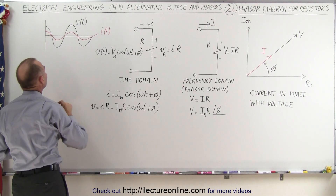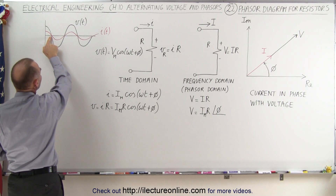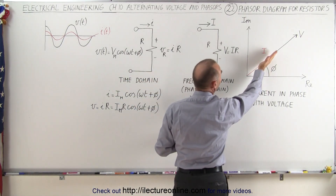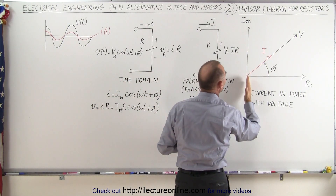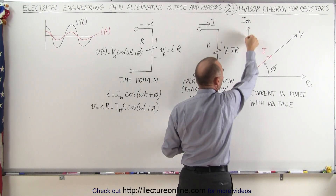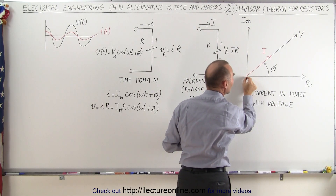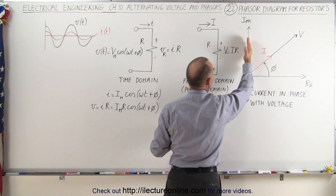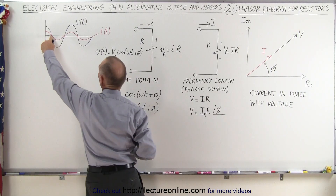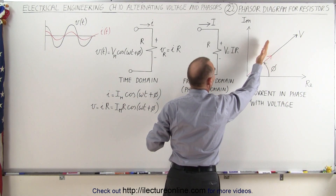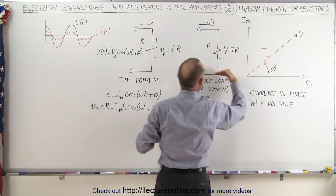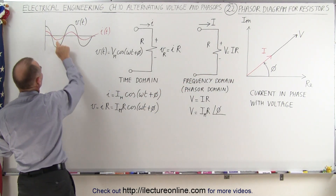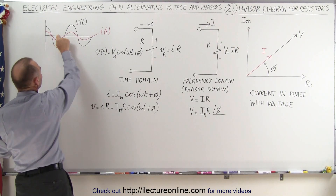The projection of the current and the voltage onto the real axis represents the physical value of that voltage or current at that moment in time. When the voltage and the current are equal to zero, that's the situation when the phasor has rotated to a position straight up along the imaginary axis, and the drop down onto the real axis shows a zero amount. When it has completely turned to that position, that corresponds to that point on the waveform. As the arrows continue to rotate to the negative real axis, that corresponds to the value of the current and voltage at that moment in time.